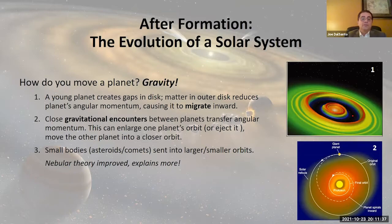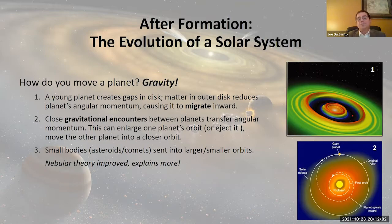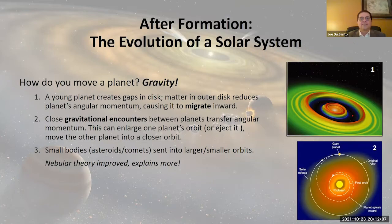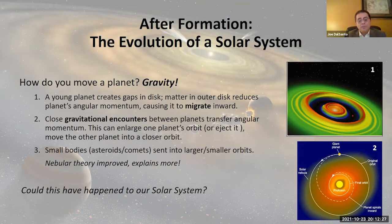This makes our solar system seem pretty stable — even friendly, just right for us. But has it always been that way? Could planetary migration have happened to our solar system? It seems very possible. Planetary scientists have been hard at work analyzing whether this may have happened, and I'm going to share some of their latest results on what we think may well have occurred earlier in the solar system's history.